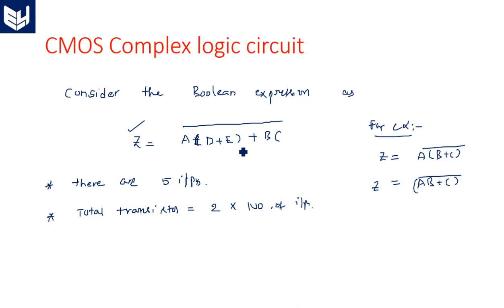Since we have five inputs, there will be 10 transistors. In the previous NMOS realization, if there are five inputs, there will be six transistors — that is N+1 transistors for N inputs. Whereas in CMOS logic circuit design, there will be 2N transistors. That is the key difference between CMOS and NMOS realization.